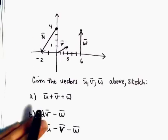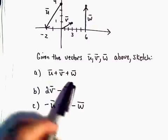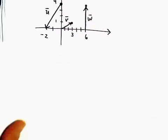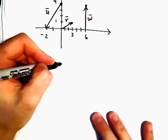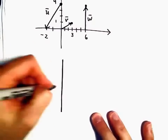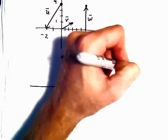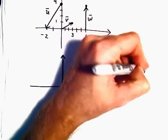So what we're going to do is we're going to sketch some new vectors based on those vectors. So in part A, we're going to look at u plus v plus w. All right, so the first thing I'm going to do, we're going to do vector u plus v plus w.